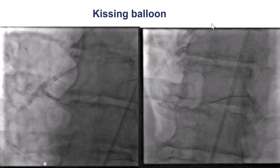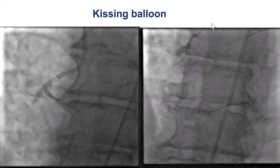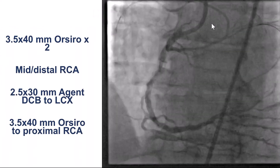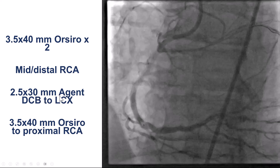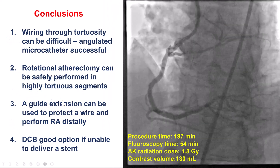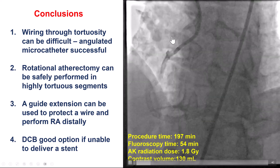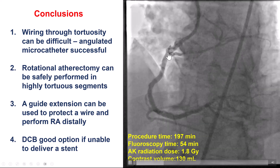We did more kissing balloon inflations, but once again we were unable to deliver any stents into the circumflex. We decided to treat the right coronary artery with stents, using several drug-eluting stents from distal to proximal. Since no stent would go into the circumflex, we used a 2.5 by 30 mm drug-coated balloon instead. Fortunately, we got a nice result — we had TIMI 3 flow into the circumflex despite it being jailed by the stents, and the drug-coated balloon should help decrease the risk of restenosis.